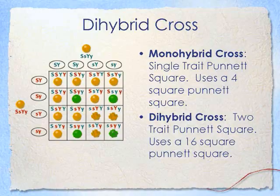This one is looking at pea color and pea shape. It could be yellow or green, or it could be smooth and wrinkled. So this one you would be crossing a yellow smooth with a yellow smooth, both heterozygous for both traits, and you can look at the possible outcomes.